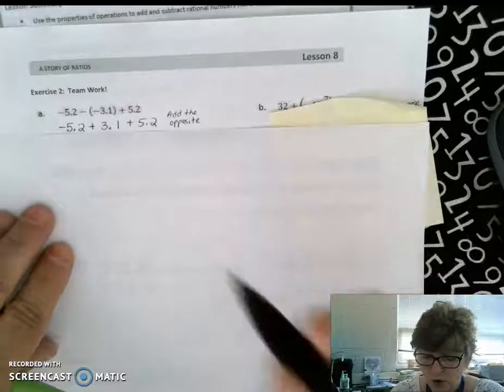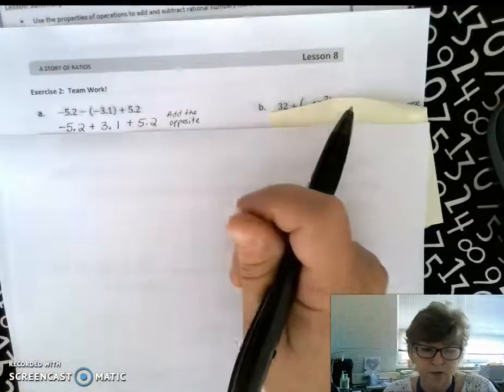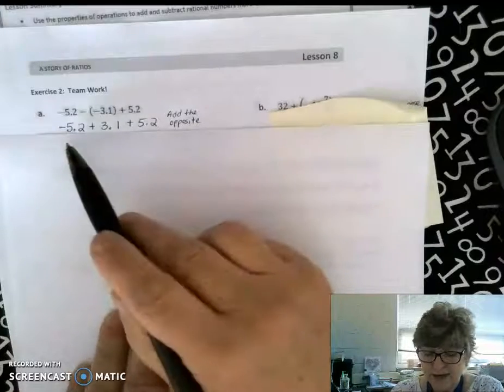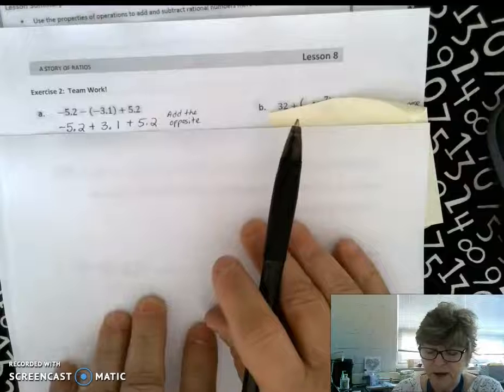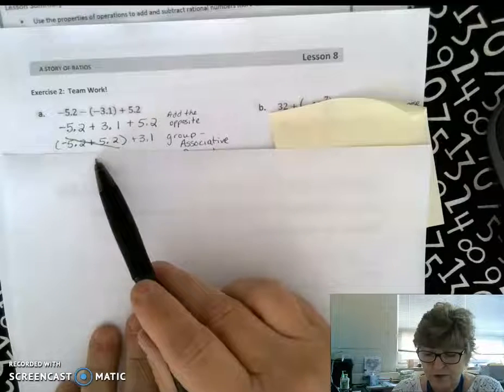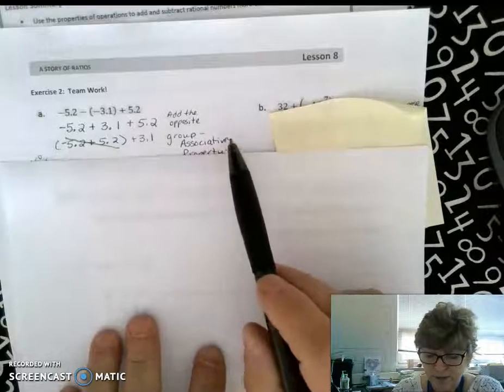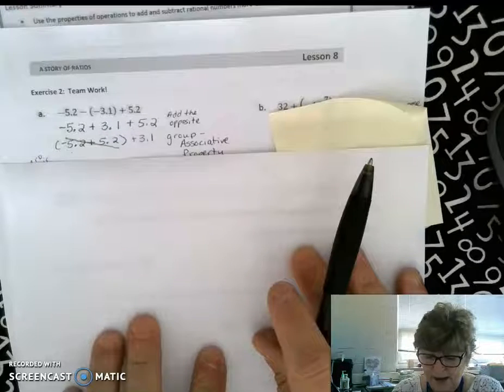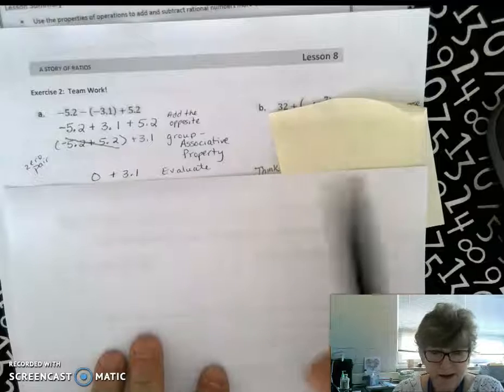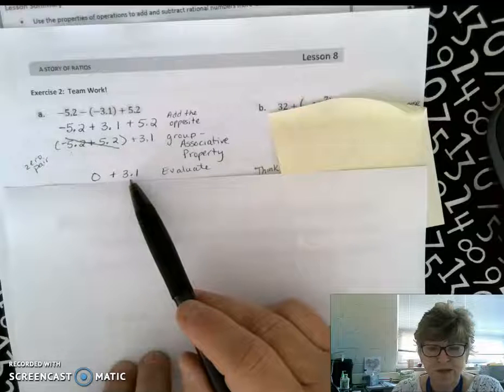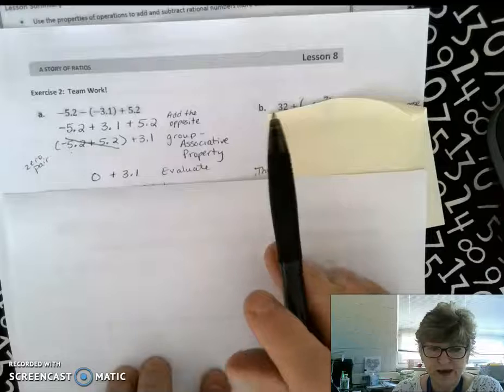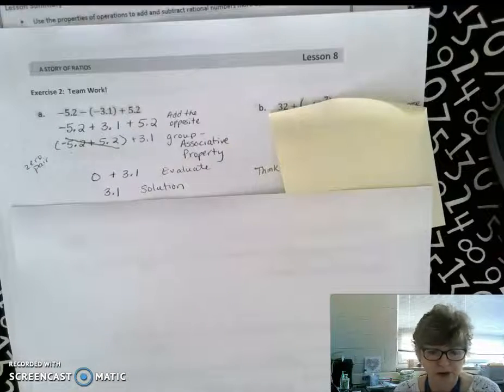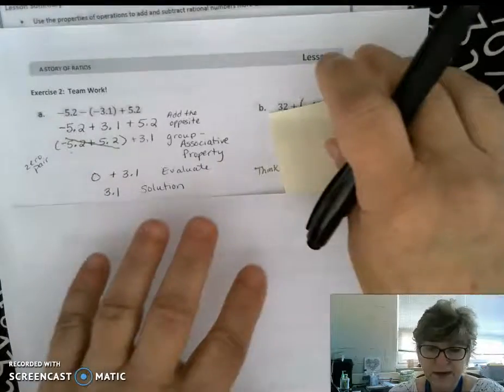So I'm going to look at, are there numbers that are compatible that would be easy to work with together to associate? You'll notice that negative 5 and 2/10ths and positive plus 5 and 2/10ths would be easy to associate using the associative property. And we know that those additive inverses actually form a zero pair. So zero plus 3 and 1/10th would give me a solution of 3 and 1/10th. If you need to pause and copy, you may. Now let's move over to B.